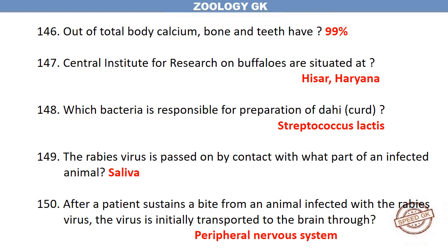Which bacteria is responsible for the preparation of dahi (curd)? Streptococcus lactis. The rabies virus is passed on by contact with the saliva of an infected animal. After a patient sustains a bite from an animal infected with the rabies virus, the virus is initially transported to the brain through the peripheral nervous system.